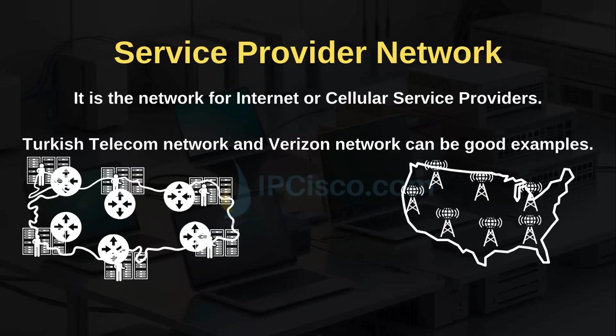Service provider networks are the networks for internet service providers and cellular service providers. Turkish Telecom network and Verizon network are good examples of such large networks. These networks have large data centers in different locations across countries. They have thousands of employees especially for network operations and activities, and they use a lot of network devices including the most valuable ones.